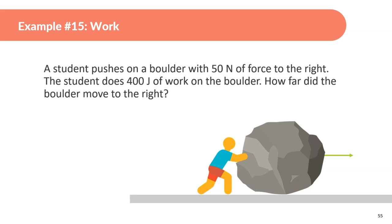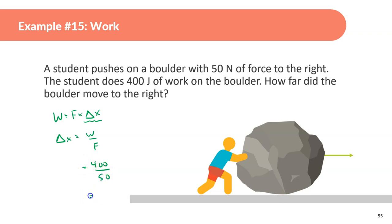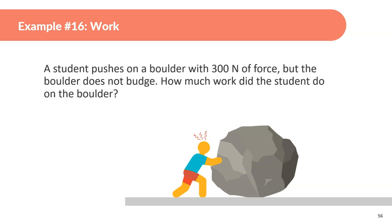A student pushes a boulder with 50 newtons to the right and does 400 joules of work. How far did the boulder move? Displacement equals work divided by force: 400 divided by 50 equals 8 meters. Next: a student pushes a boulder with 300 newtons but the boulder does not budge. Work equals force times displacement; displacement is zero, so zero joules of work is done.